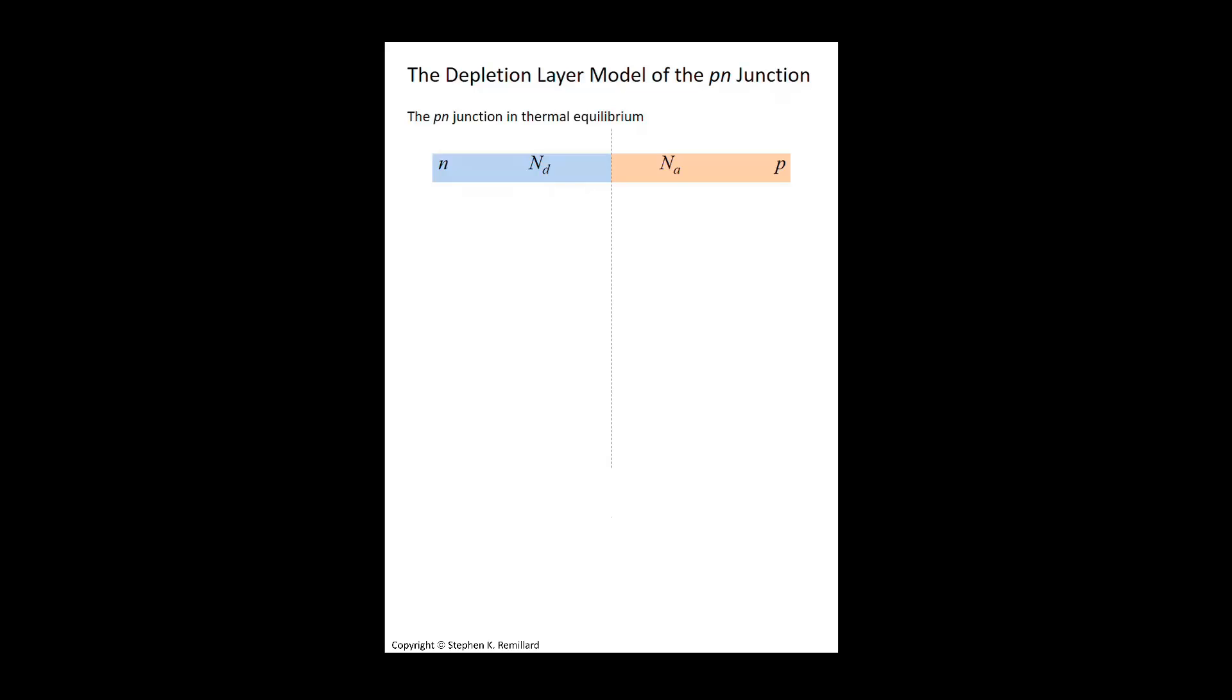The n-type has donor doping and the p-type has acceptor doping. The energy level diagram is no longer that of a single piece of semiconductor. On the n-type, the conduction band edge is brought down closer to the Fermi energy, and when you have acceptor dopants, the valence band edge is brought up close to the Fermi energy.